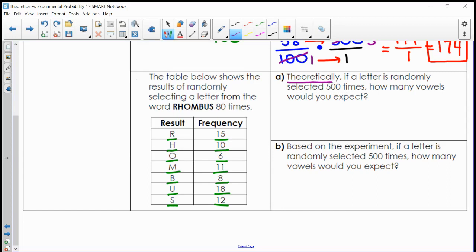If a letter is randomly selected 500 times, how many vowels would you expect? Remember, a vowel is picking A, E, I, O, or U. Looking at my word rhombus, I can see if I were to select a vowel, it would be letter O or letter U, which means there are two possible outcomes for this scenario, out of the total of seven. So this would be a two out of seven chance of theoretically selecting a vowel.